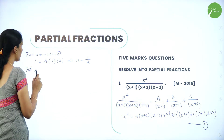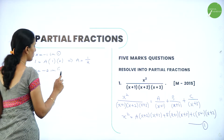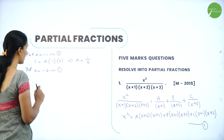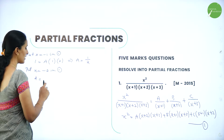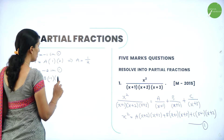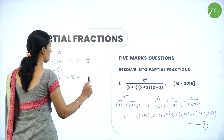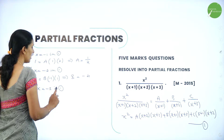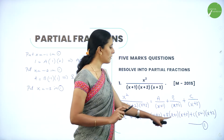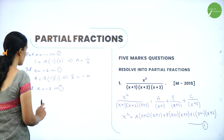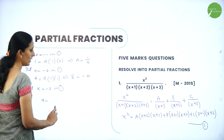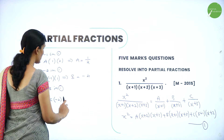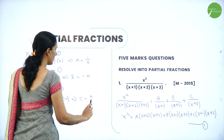Next, put x = −2 in equation 1. The A and C terms become zero. We have (−2)² = 4 = B(−2+1)(−2+3) = B(−1)(1), so 4 = −B, which gives B = −4. Next, put x = −3 in equation 1. The A and B terms become zero. We have (−3)² = 9 = C(−3+1)(−3+2) = C(−2)(−1) = 2C, so C = 9/2.